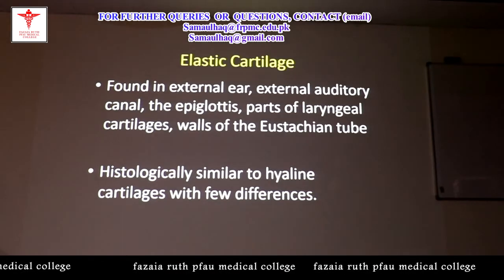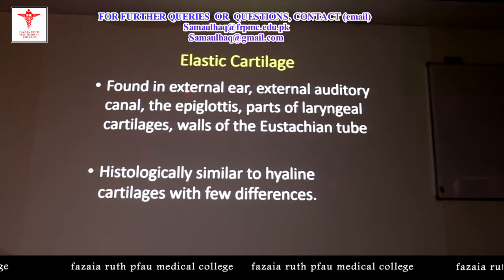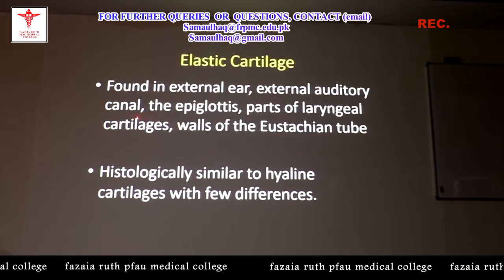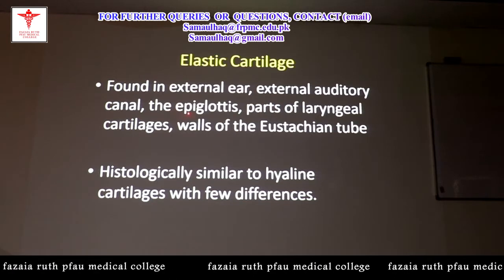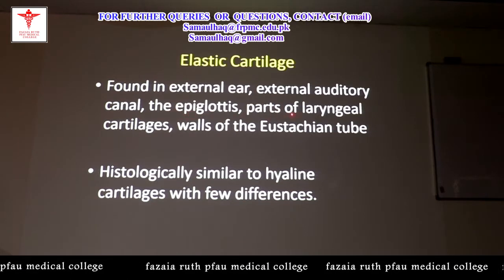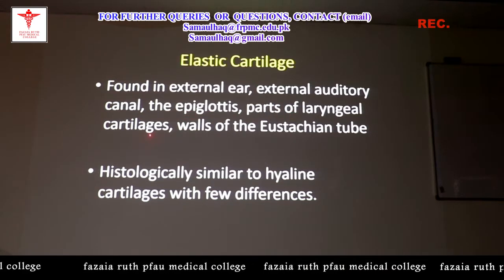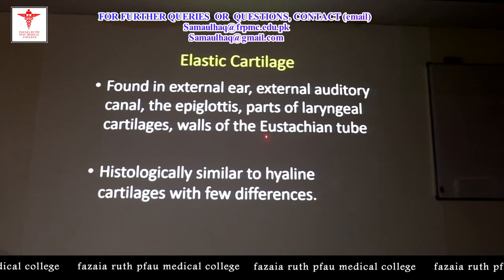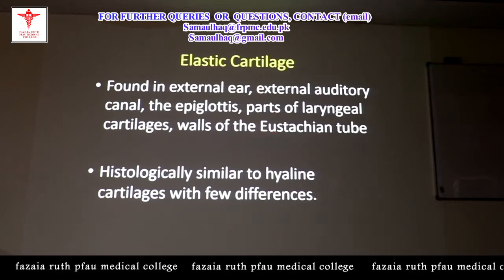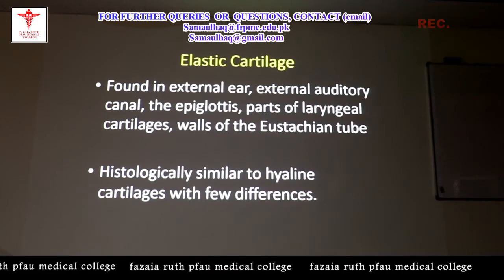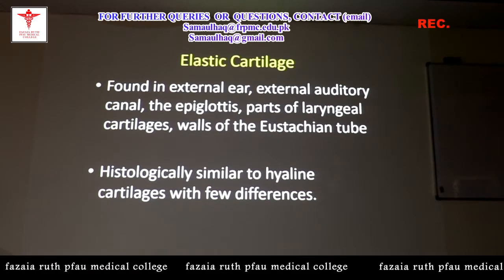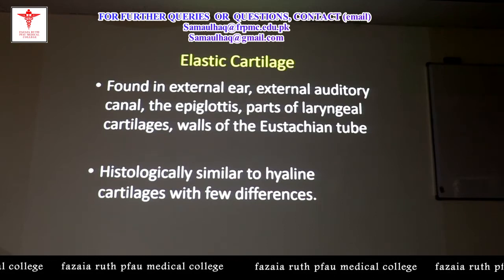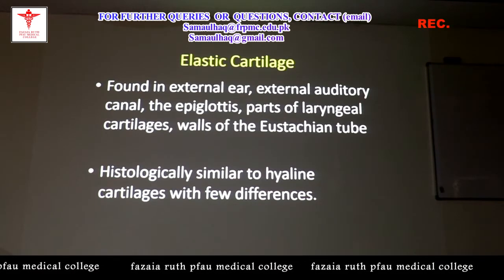The second cartilage is elastic cartilage. It is found in the external ear, external auditory canal, epiglottis, part of the laryngeal cartilages, and walls of the Eustachian (auditory) tube. Histologically, it is similar to hyaline cartilage with a few differences.